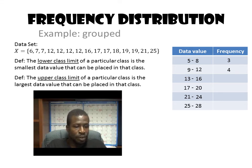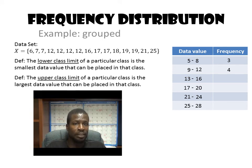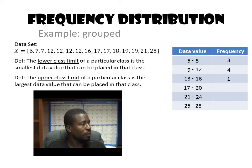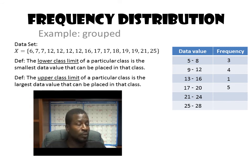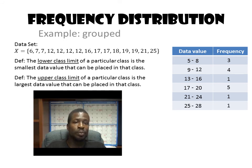The third class, 13 to 16, I only see that one 16, so the frequency is 1. The fourth class, 17 to 20, has two 17s, one 18, and two 19s — that's 5 values, so the frequency is 5. The fifth class, 21 to 24, has only one 21, so the frequency is 1. And the last class, 25 to 28, has only one 25, so the frequency is 1.